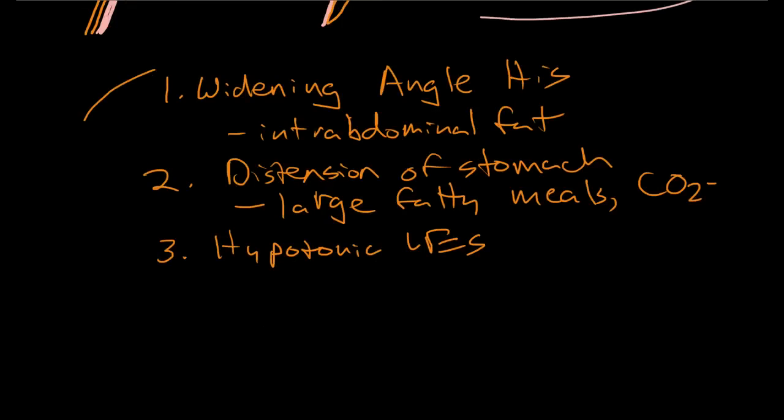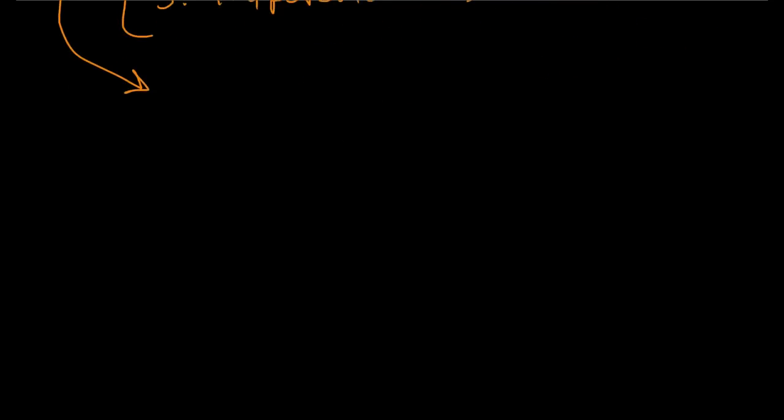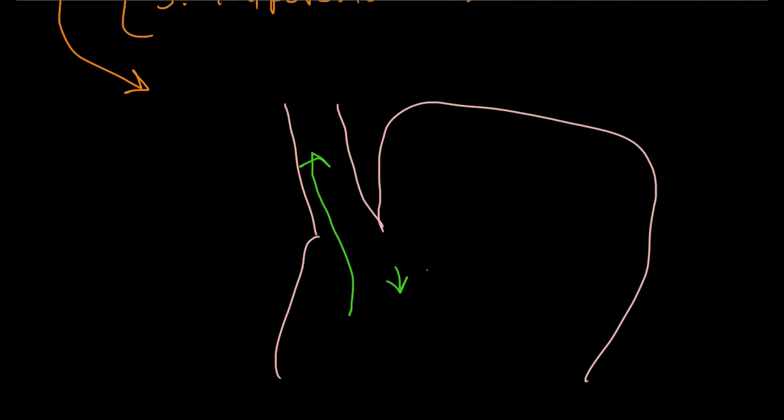So what do these three things do? Well, they allow gastric contents to regurgitate up into the esophagus. So here we have the esophagus, and we've got the stomach, and we've got a hypotensive LES, and we've got a distended stomach, and a widened angle of His, and that's allowing gastric contents.